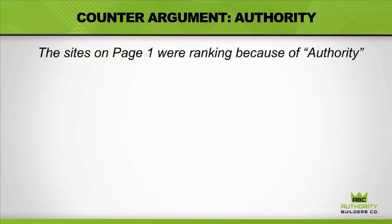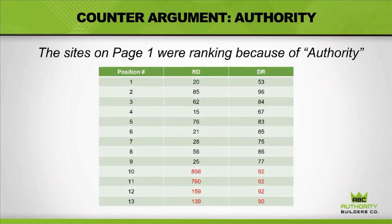Let's talk about counter arguments. Some people might think the sites on page one simply had more domain authority — higher DR than the ones on page two. Let's add a DR column to this table. You can see that DR on page two is nothing to shake a stick at: we're looking at 92s and 90s — they have higher DR than most webpages on page one. So that argument doesn't hold up.